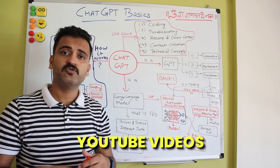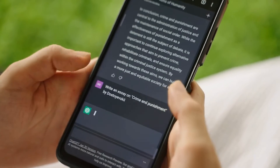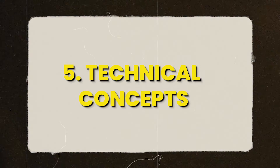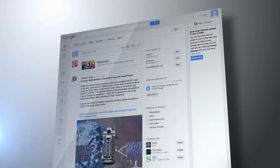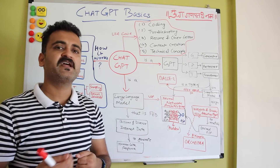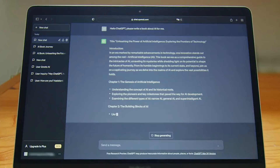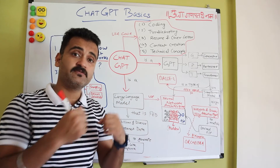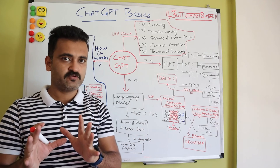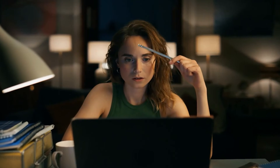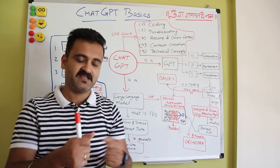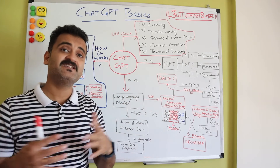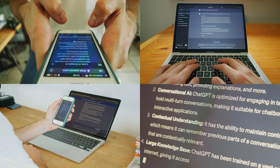Fourth is content creation — writing technical blogs, tweets, storytelling, YouTube video scripts, anything around content creation. ChatGPT can help a lot with research as well. Fifth and last is understanding technical concepts. Previously my first go-to for research was Google, but now I use both — ChatGPT gives very specific responses while Google gives varied results you need to dig into. Don't quit Google, though, because ChatGPT can also give wrong responses. Apply your own judgment before blindly believing what ChatGPT tells you — always cross-check.